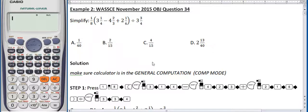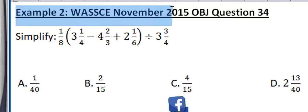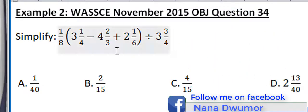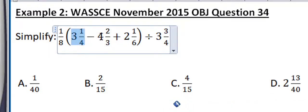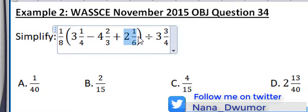Today we're looking at example 2 under the real number system, specifically simplification of expressions. We're taking example 2 from WASSCE, their 2015 objective question 34. Simplify 1/8 of (3¼ minus 4⅔ plus 2⅙), divided by 3¾.